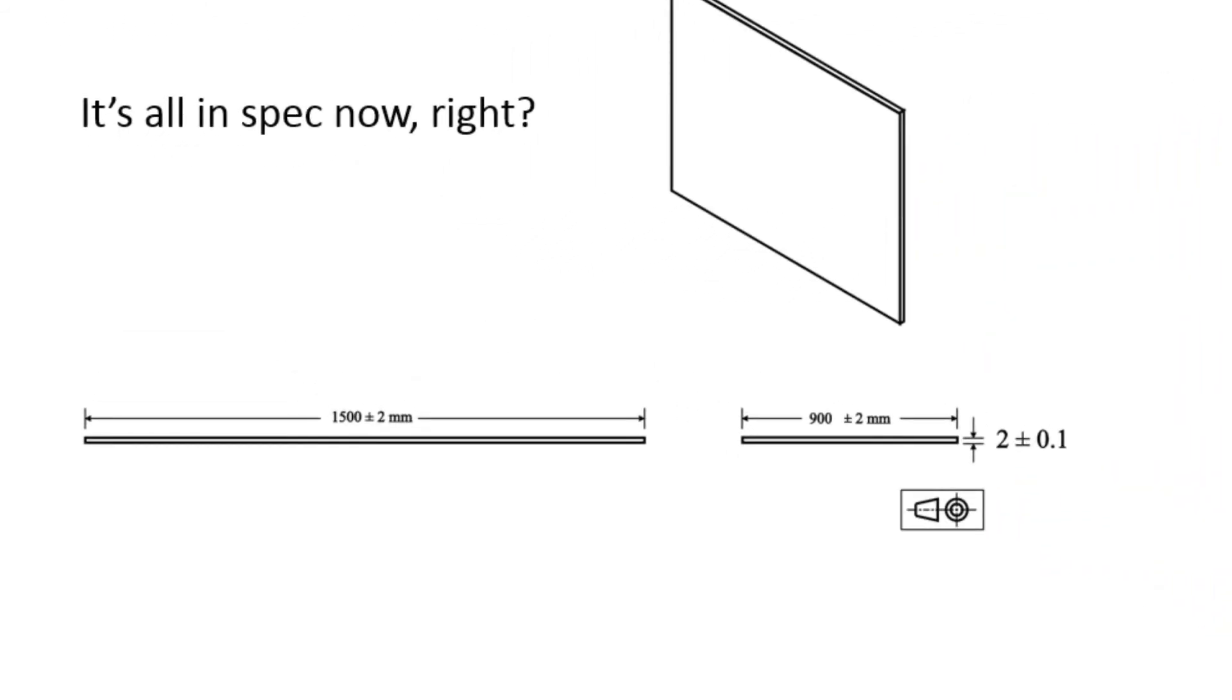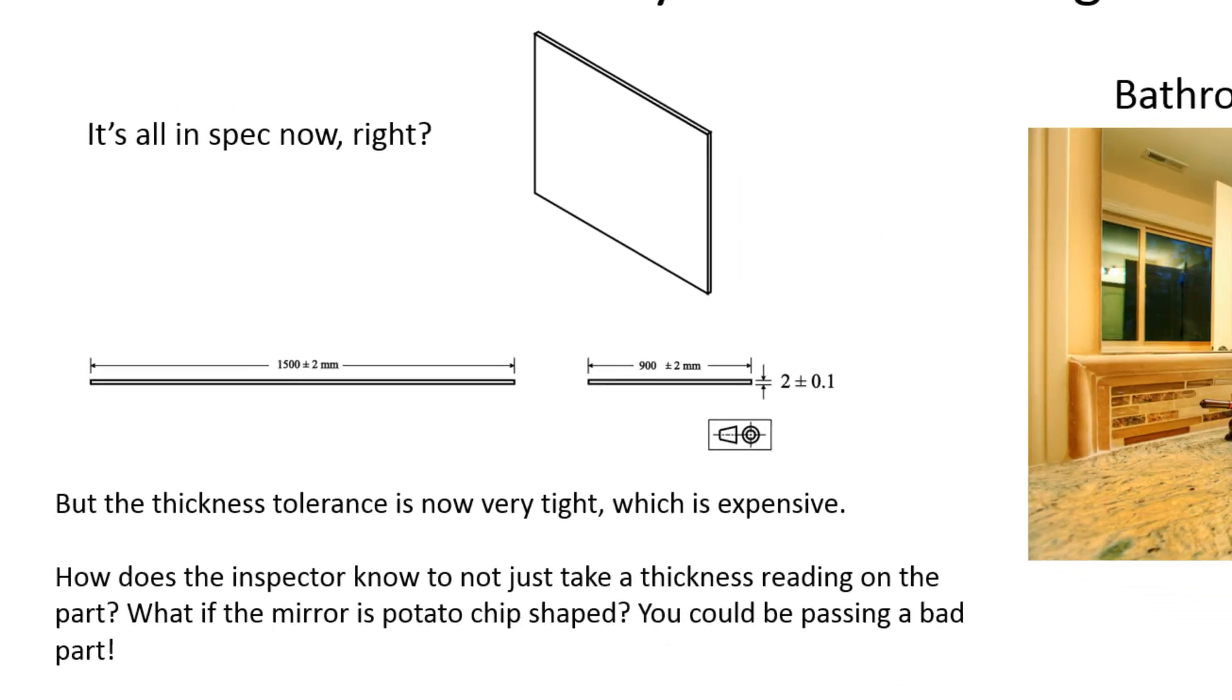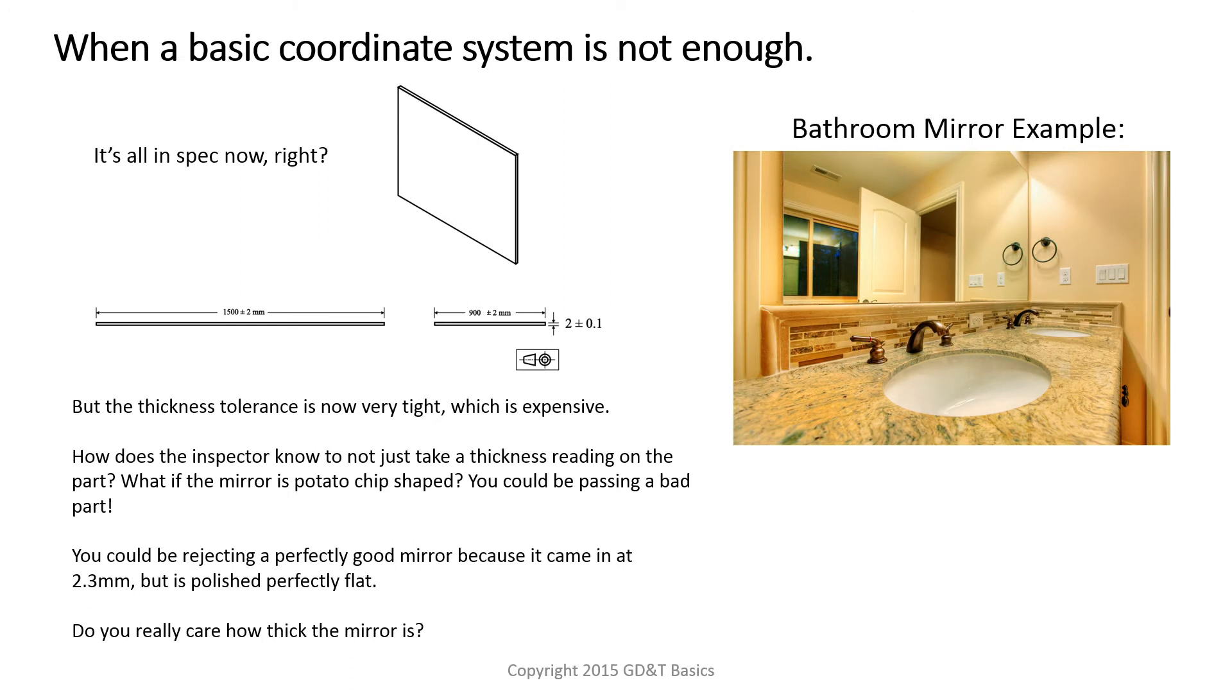So it's all good now. You have 2 plus or minus 0.1 over the entire length of the mirror. But the thickness tolerance is now very tight, which is very expensive. And also, how does the inspector know not to just take a thickness reading on the part?